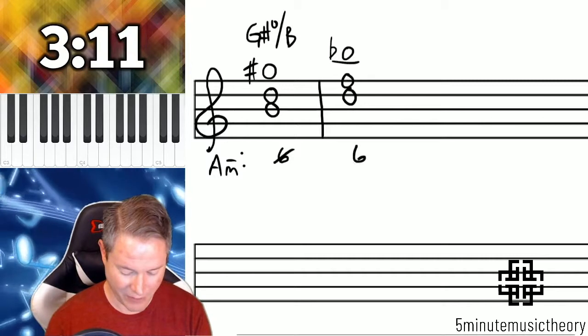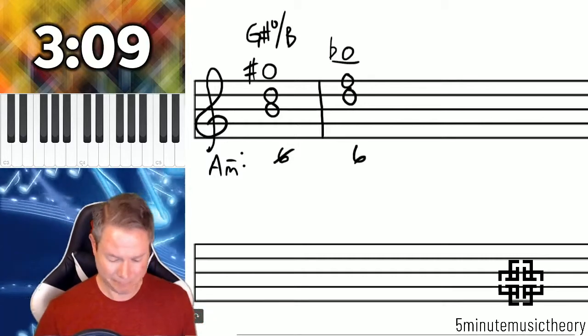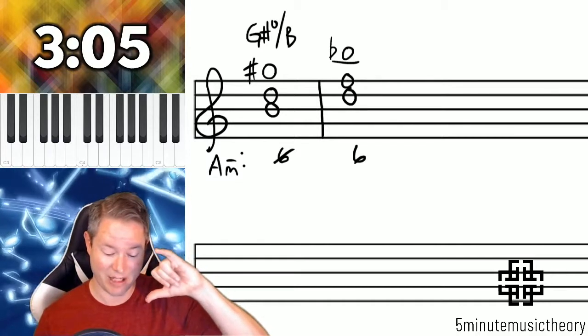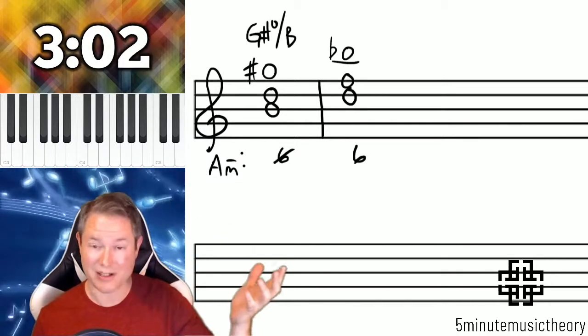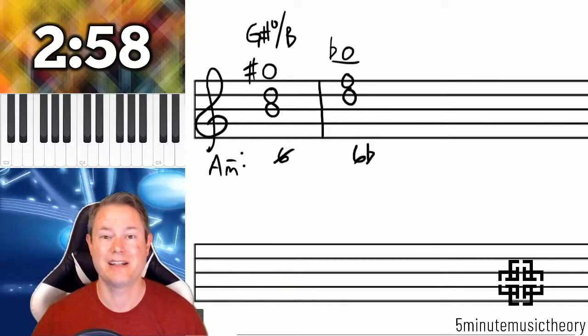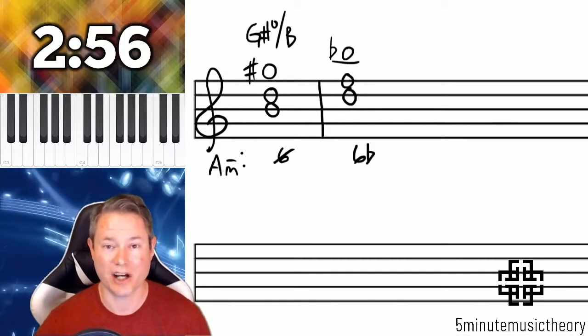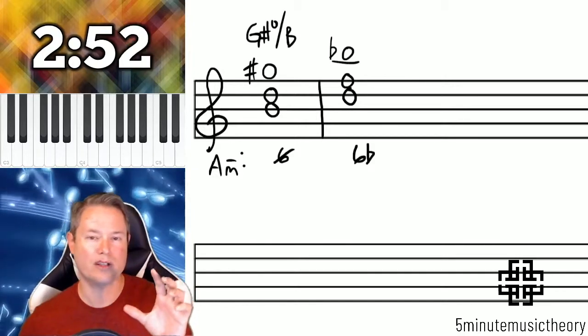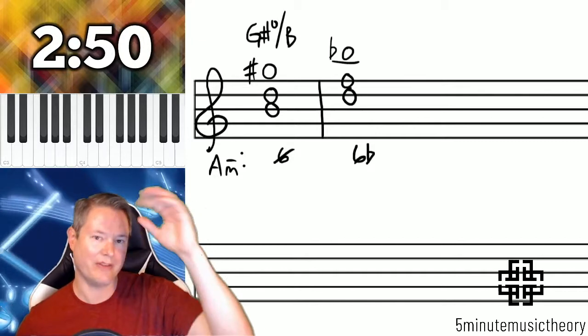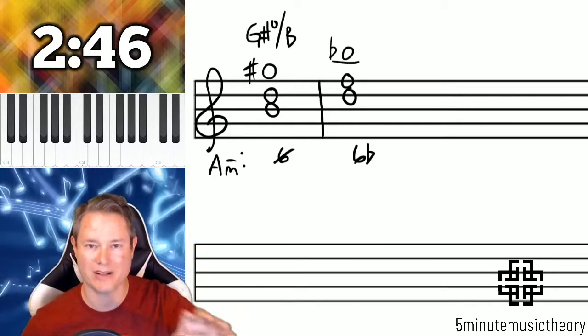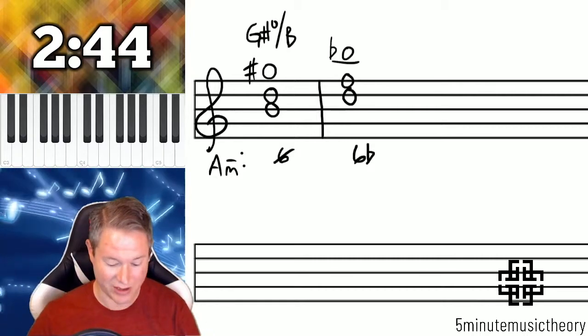This chord is in first inversion, so we would put 6, and then above the bass is that 6th, but instead of it being a B natural, which is in the key signature, it's a Bb. So if we put a flat next to that 6th, that indicates that the 6th above the bass is flat. If you're adjusting that note to a natural, let's say it's a sharp and then it turns into a natural, you'd put a natural there. What you're doing is putting whatever the actual accidental is in that situation.